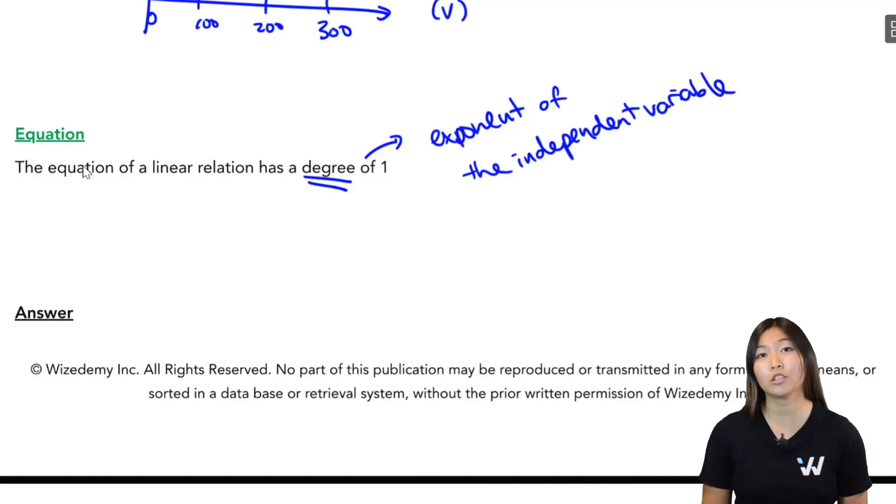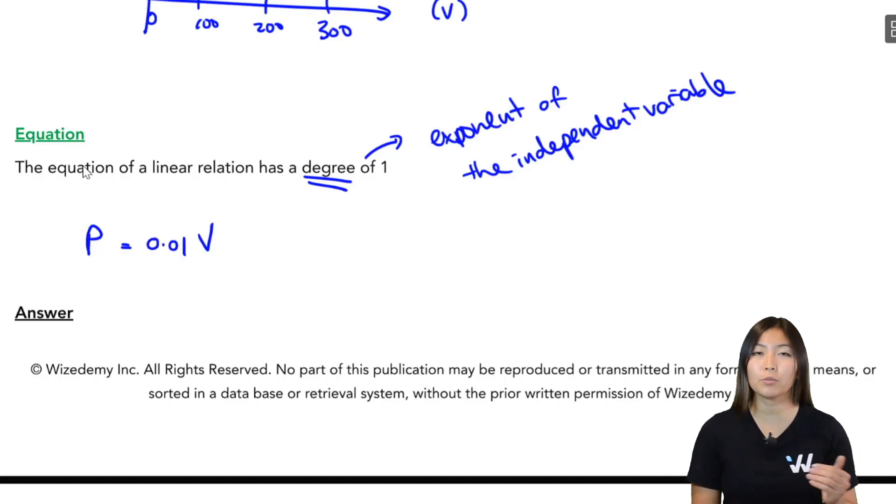So let's try to come up with the equation of this relation. Now, the pay, I know it depends on the number of views. So for every one view I get, I get $0.01. So all I need to do is multiply my 0.01 by the number of views I get. That's how I get how much I get paid. So the equation is just going to be P = 0.01 times V. So the pay is $0.01 times the number of views that I get.